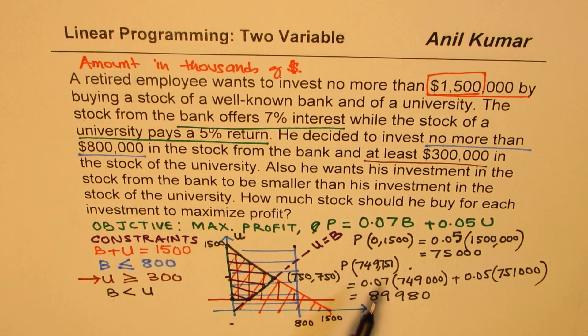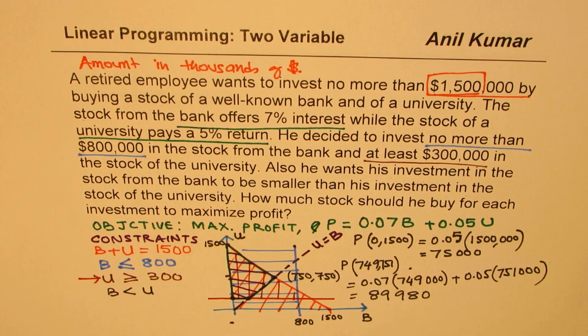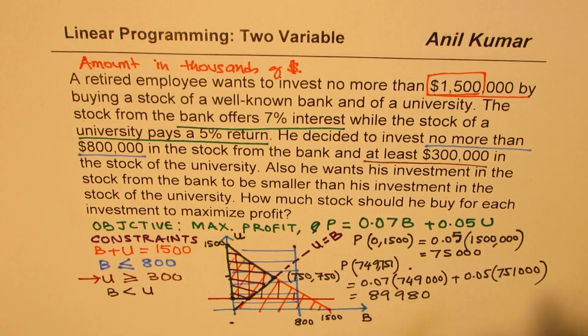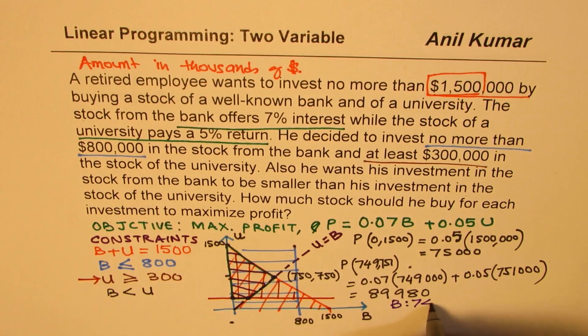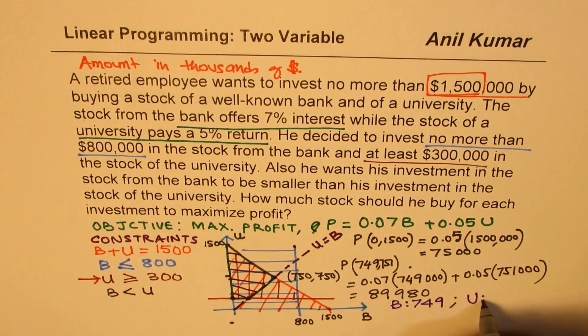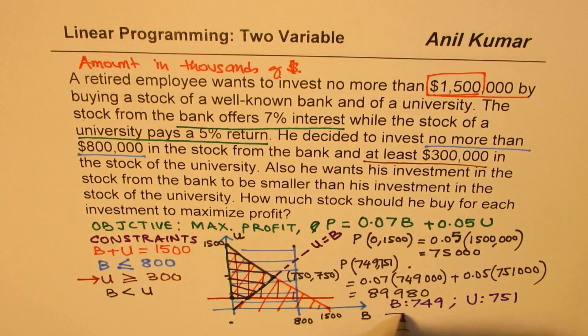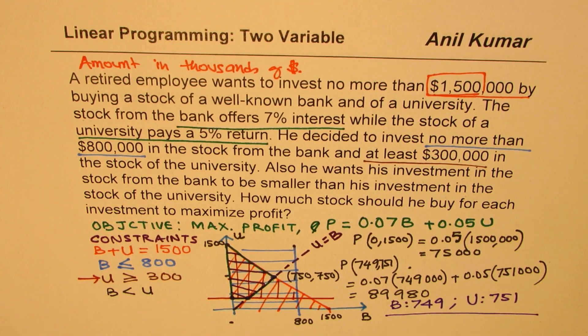Therefore, our suggestion from this situation is that in the university and the bank, the distribution could be - for the bank, it is 749, and for the university, it is 751. So that will satisfy all our conditions. We have invested more in the university than in the bank, university paying slightly lesser returns 5% as compared to that of the bank of 7%, to keep it safe. And I think that is the best investment. I hope you understand and appreciate the approach.